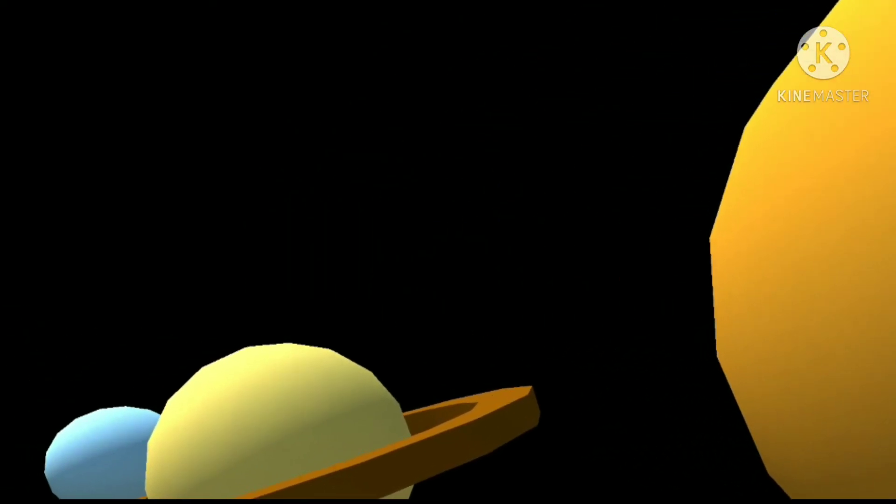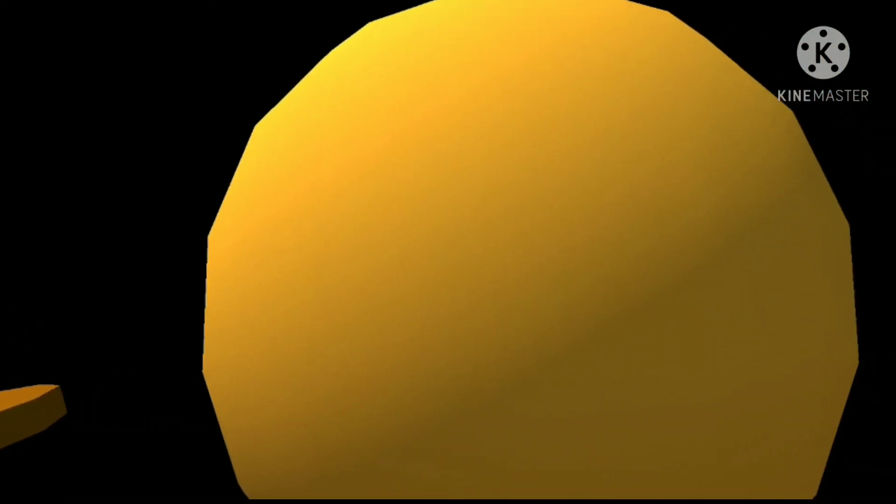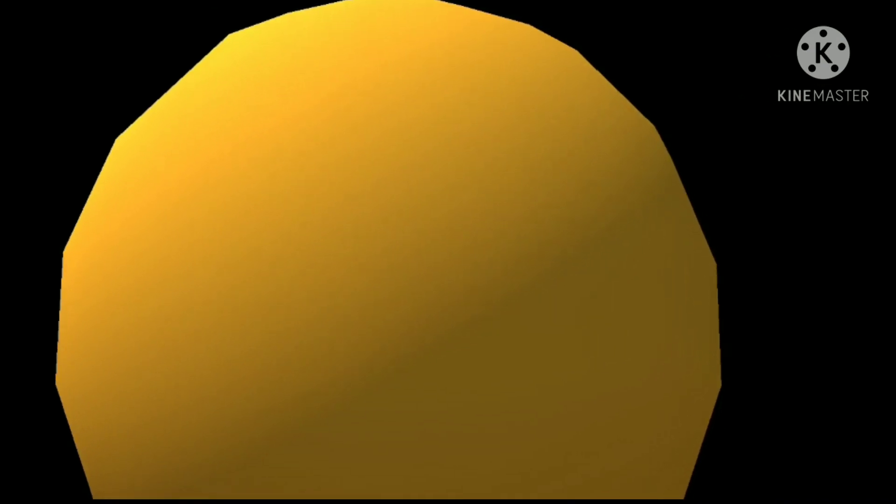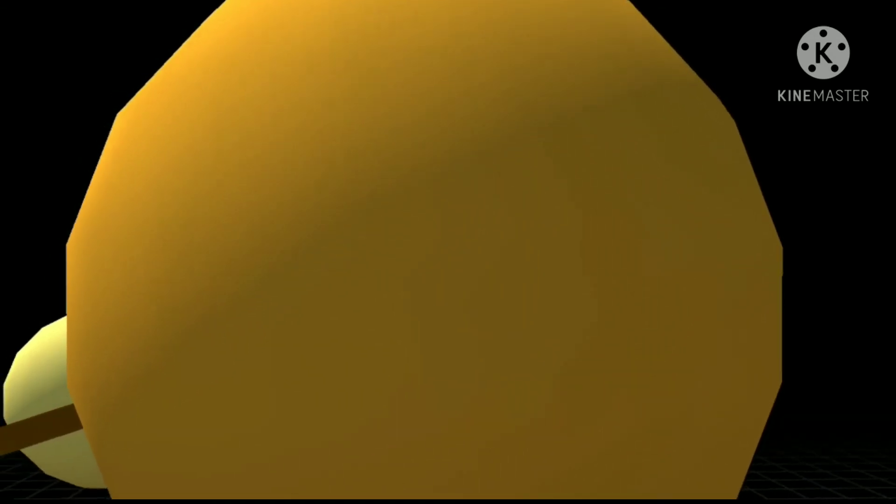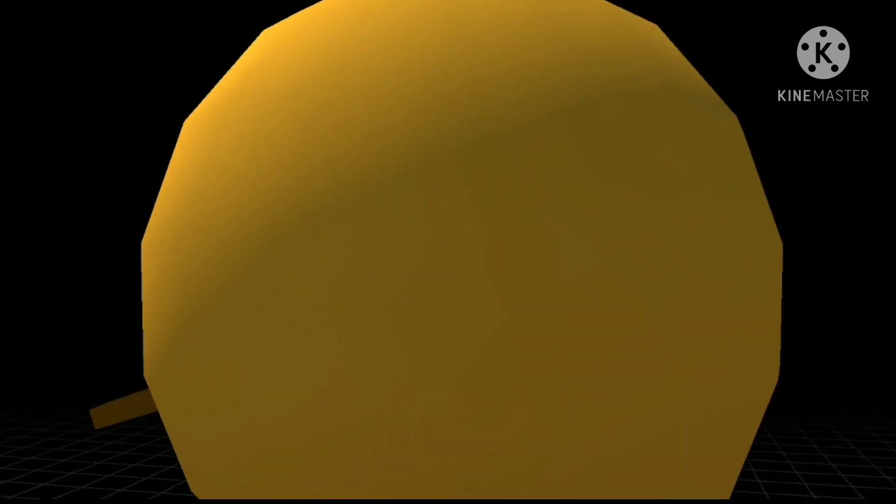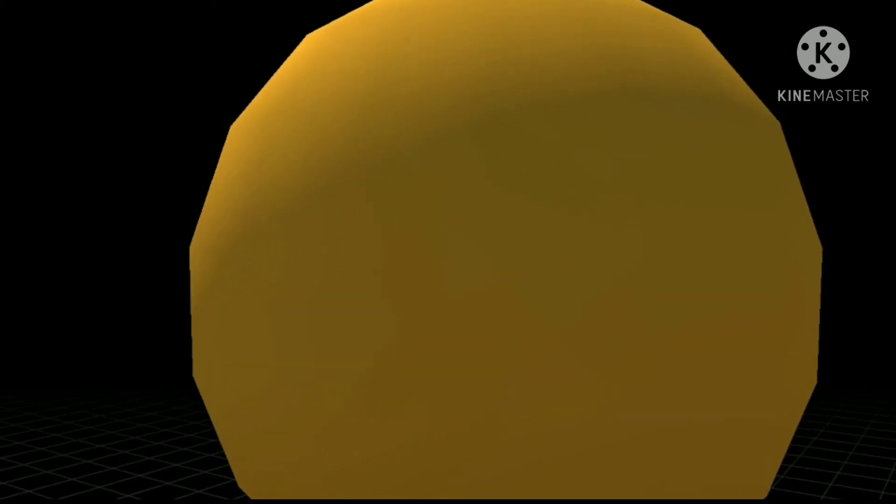Jupiter. Next planet is actually a gas giant, Jupiter. All I would tell you is that it will be a bad idea to step foot inside this planet. Jupiter is considered to be the biggest planet in the solar system. Some part of Jupiter is actually hotter than the surface of the sun.